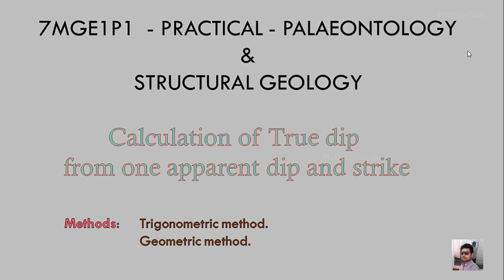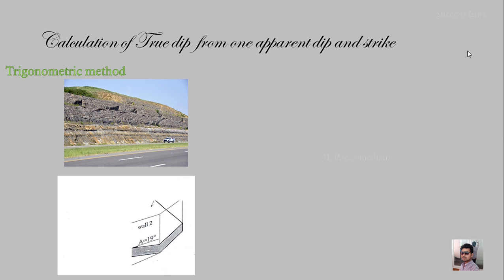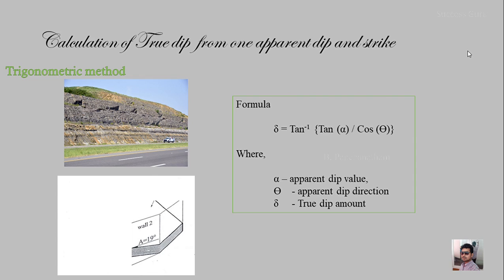We will use two methods: the trigonometric method and the geometric method. We have already seen that if the formation is inclined and the road cut is parallel to the strike, the formation appears horizontal. If we have two outcrops — one parallel to the strike and one in another direction — we can calculate the true dip. In trigonometry, the formula is: sigma = tan⁻¹(tan α / cos θ), where alpha is the apparent dip value, theta is the apparent dip direction, and sigma is the true dip amount.